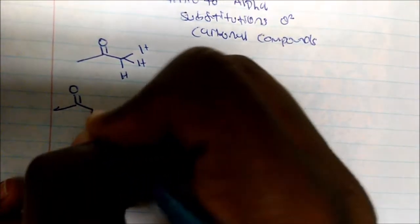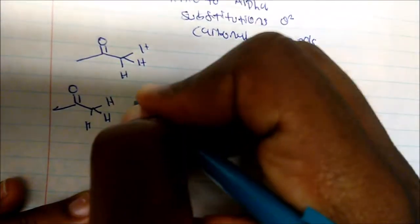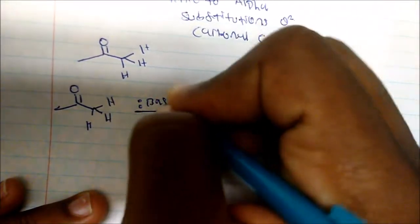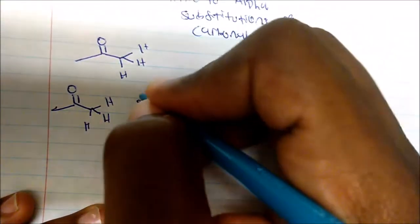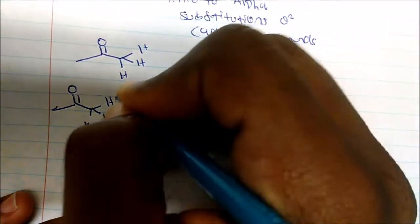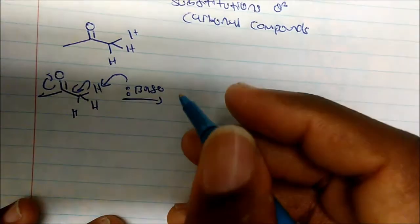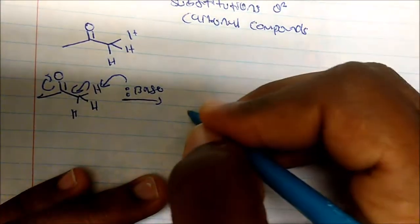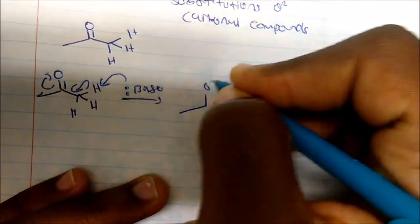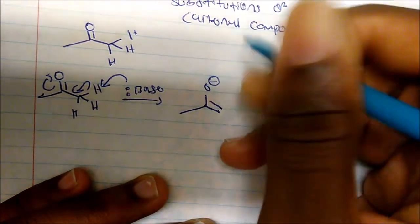In general form, we take these compounds and add them in some sort of base. The base deprotonates, forms a double bond and kicks off on the oxygen. We've come to the enolate form where we have an oxygen that's negatively charged and a double bond here.